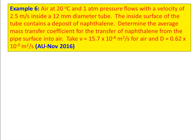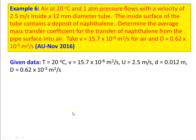We take example number six from November 2016. Air at 20°C and 1 atmosphere pressure flows at 2.5 m/s inside a 12 mm diameter tube. The inside surface contains a deposit of naphthalene. Determine the average mass transfer coefficient for the transfer of naphthalene from the pipe surface to the air. Given: ν = 15.7 × 10⁻⁶ m²/s, D = 0.62 × 10⁻⁵ m²/s, diameter = 0.012 m, u = 2.5 m/s.